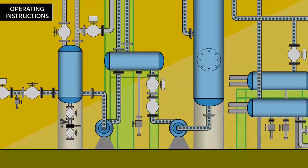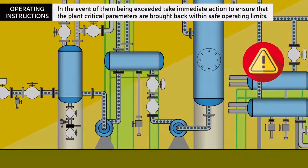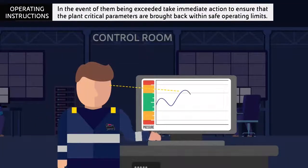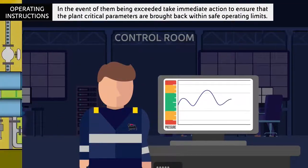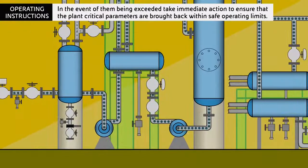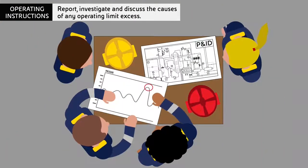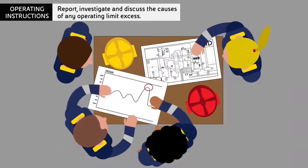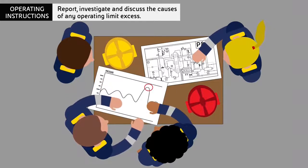In the event of them being exceeded, take immediate action to ensure that the planned critical parameters are brought back within safe operating limits. Report, investigate and discuss the causes of any operating limit excess.